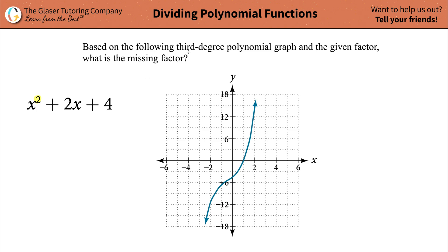In other words, if I'm dealing with a third degree polynomial, but I have one of the factors and it's a second degree, that means I'm missing a one degree polynomial, first degree.